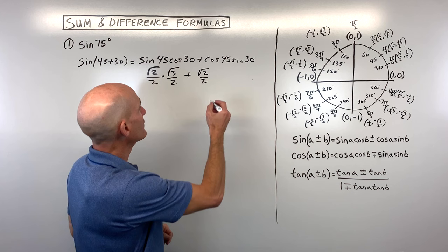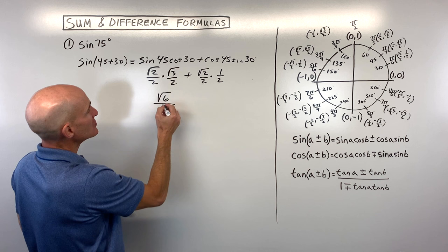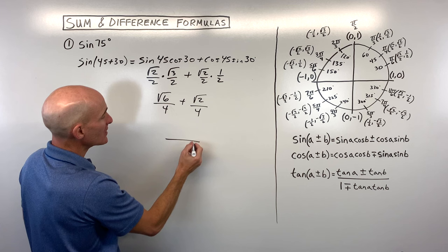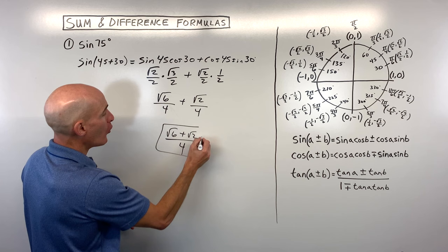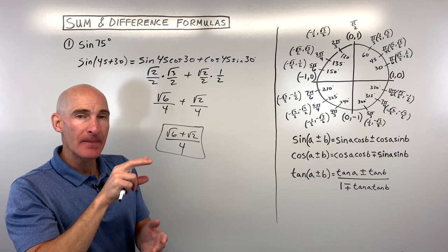Now all we have to do is a little bit of arithmetic. Multiply the numerators together: √2 times √3 is √6, and 2 times 2 is 4. For the second term: √2 times 1 is √2, and 2 times 2 is 4. We have a common denominator of 4, so we can combine this into one fraction: (√6 + √2) / 4. This is the exact value for the sine of 75 degrees — more precise than the decimal your calculator gives.